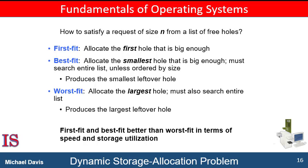The first fit strategy is to allocate the first block that is big enough. Searching can start either at the beginning of the set of blocks or at the location where the previous first fit search ended, and we can stop searching as soon as we find a free block that is big enough. The best fit strategy is to allocate the smallest block that is big enough; in this case, we must search the entire list unless the list is ordered by size.